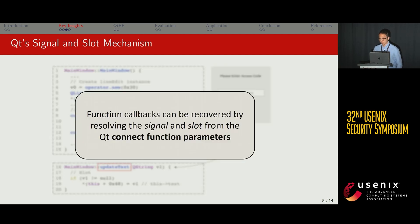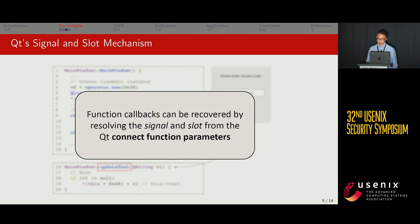From this workflow, we can infer that the function callbacks of a Qt program can be recovered from a reverse engineering perspective by resolving only the signal and the slot from the Qt connect function parameters.